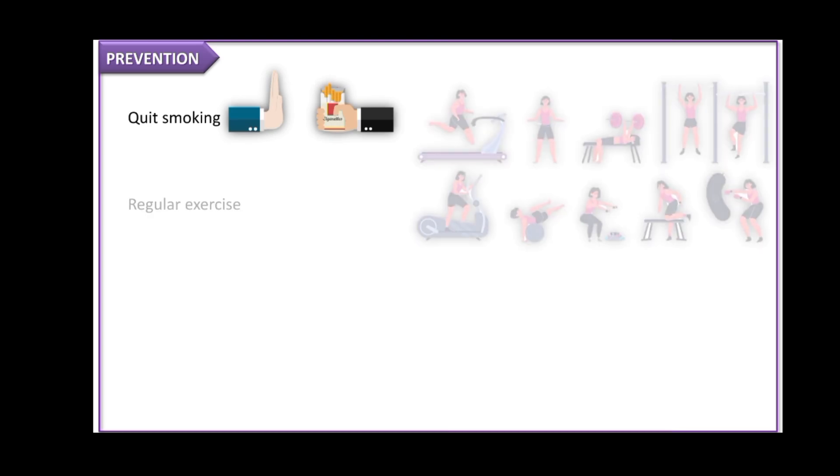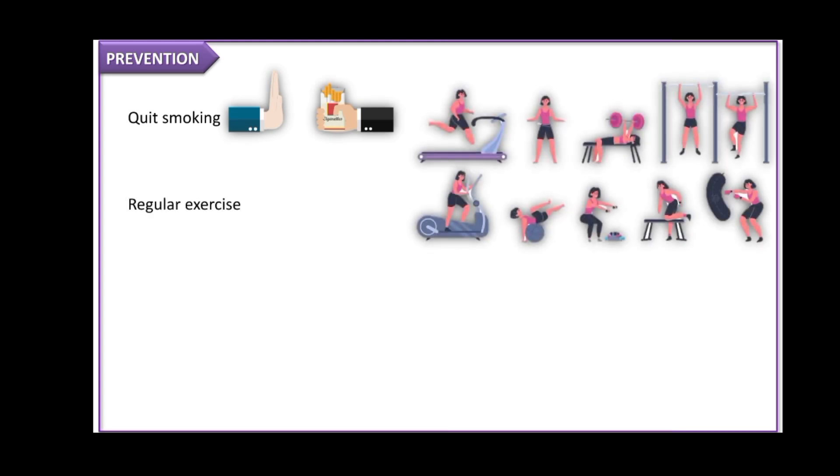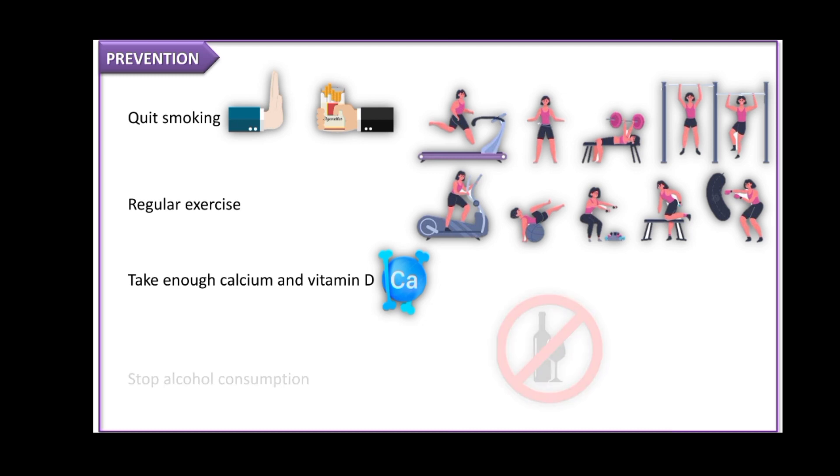Prevention of osteoporosis is quite simple and includes smoking cessation, regular exercise, taking enough calcium and vitamin D, and stopping alcohol consumption.